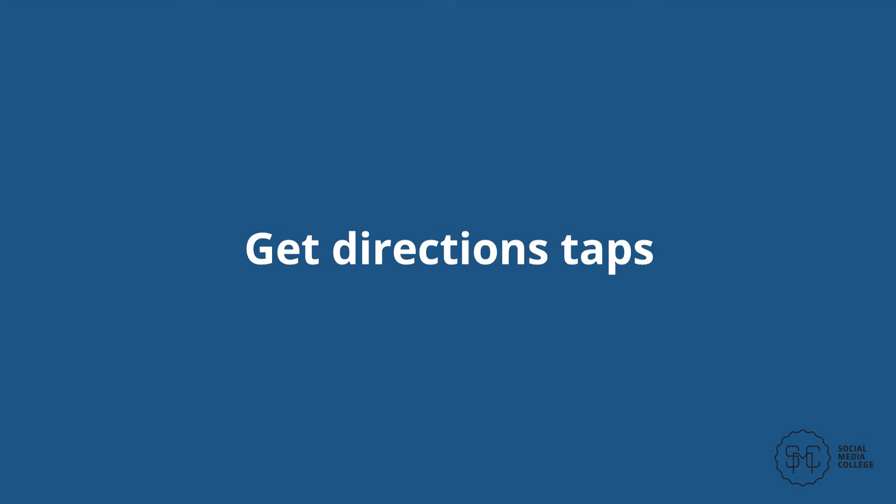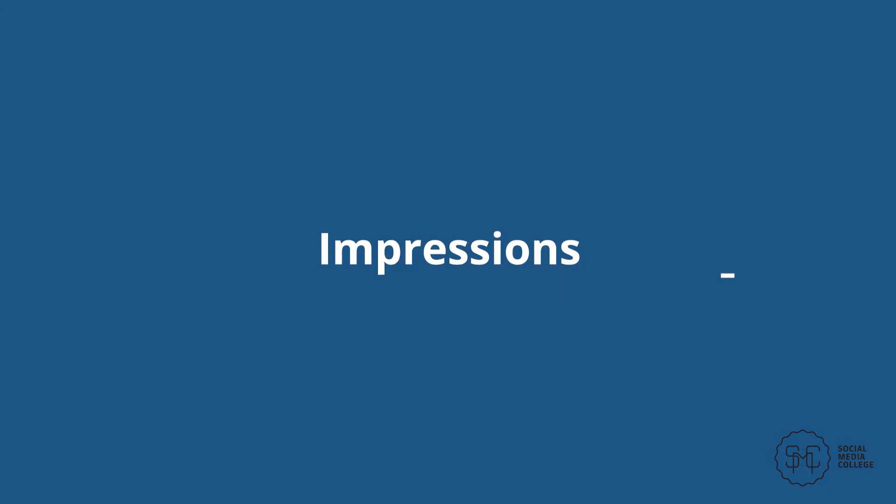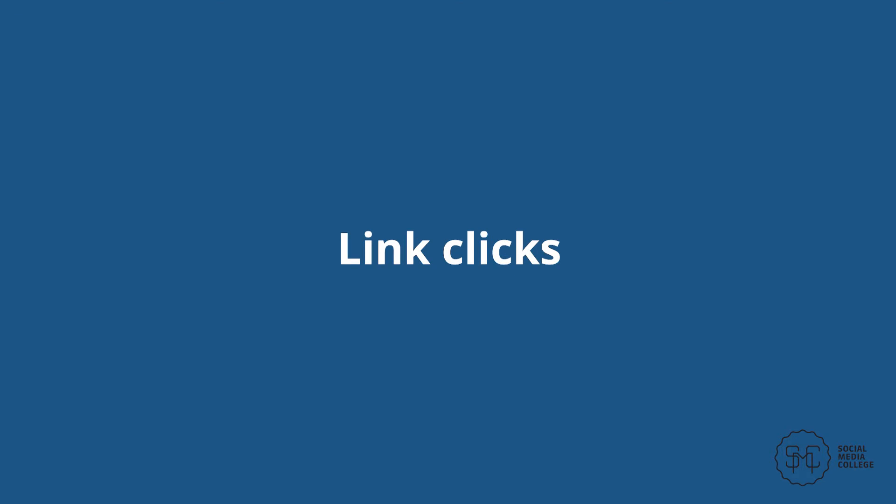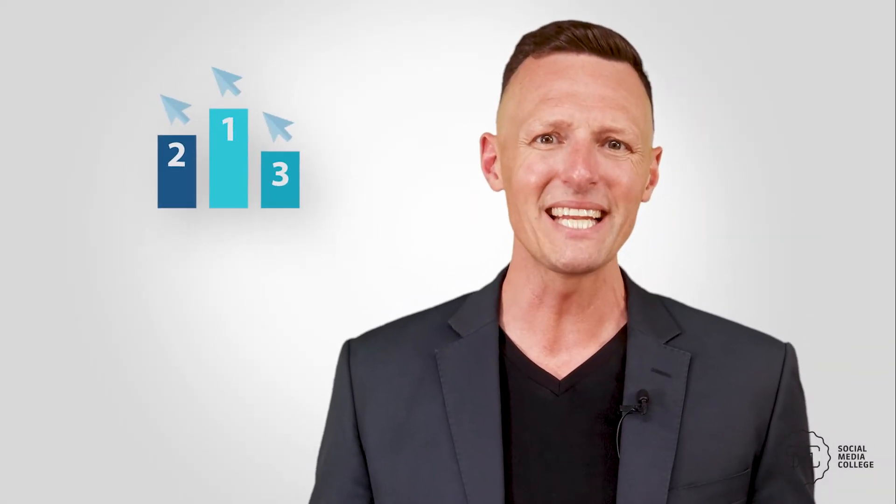Get directions taps: this metric will show you how many accounts followed your Story to the Get Directions button on your profile and then tapped on it, meaning users clicked to get directions to your physical location. Impressions: the Stories with the most impressions are your top watched Stories — you've reached more accounts with these particular Stories than others. Link clicks: for links included in an Instagram Story, business accounts can see how many link clicks they received. The Stories with the highest number of clicks can be emulated in future content.